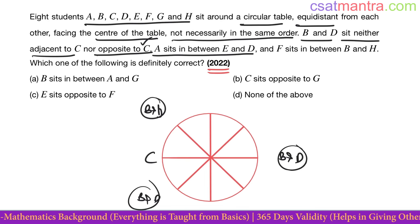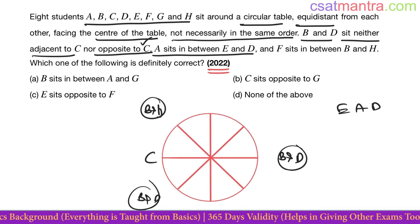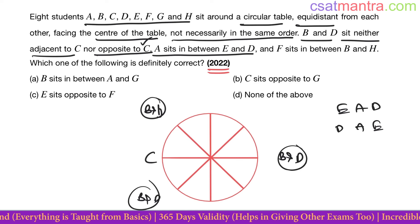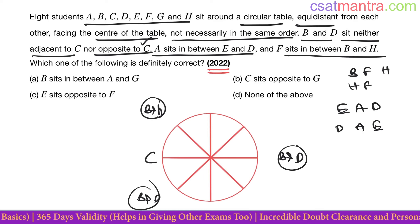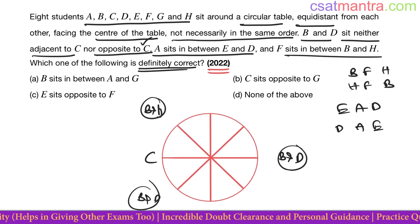A sits between E and D. So this is how it would be, or this is how it would be. F sits between B and H. Which one of the following is definitely correct?